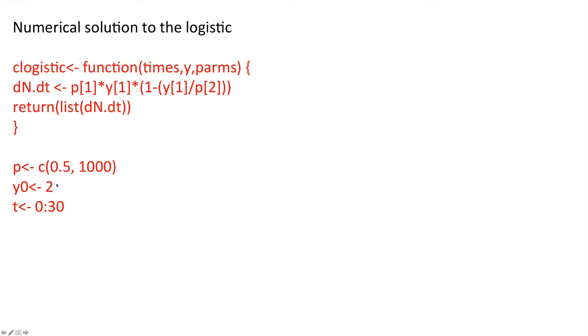Our start value might be 2 and we would like to simulate between 0 and 30. Here the integration is occurring over continuous time and yet it's reporting only each individual discrete time unit.